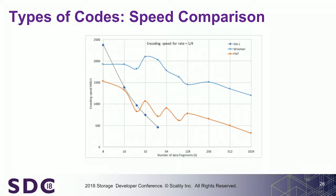This is the raw performance. You see ISA-L is very good for a small number of fragments, but because of the matrix multiplication, after some point — even with hardware acceleration — the mathematical complexity takes over and performance drops. Leopard — the LDPC — is very fast, but it's not an MDS code, so it's not that interesting for us. We oscillate between 500 and 1,500 megabytes per second depending on the number of symbols.